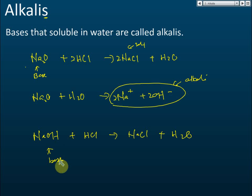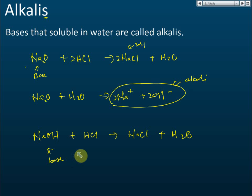All alkalis are bases, but not all bases are alkalis. A base that does not dissolve in water is not an alkali — it is still called a base. However, if a base dissolves in water, it becomes an alkali. That is the key difference between a base and an alkali.